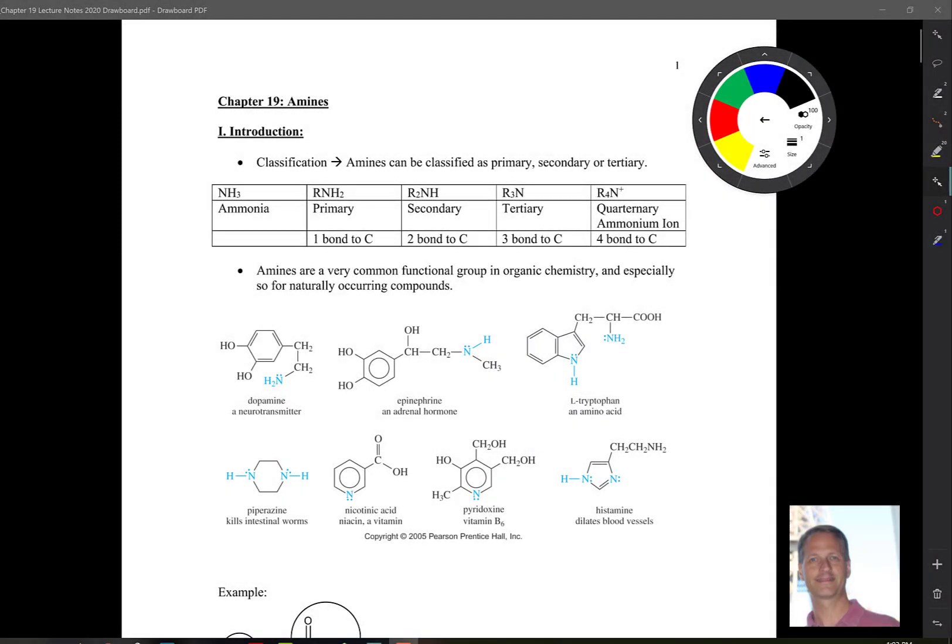Chapter 19 is a really interesting chapter. It deals with amines. Amines are very common in nature and seen in lots of natural products and also in biochemistry. So to start off, we're going to look at an introduction and then we'll talk about nomenclature today.